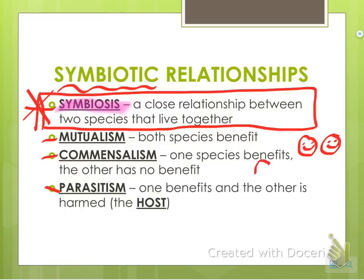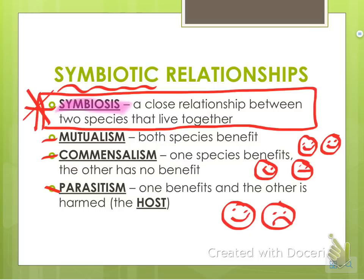Commensalism is where one species benefits and the other is neutral. For example, certain fish follow sharks and get the food scraps from the shark's meal — the shark isn't harmed or helped, but the fish gets a free meal. Parasitism is when one species benefits and the other is harmed. Like a flea on your dog: the flea gets food from the dog's blood, but the dog is harmed — in some cases dogs can even have severe allergic reactions to fleas. And that's all for organisms and their environment.